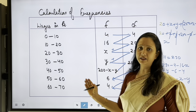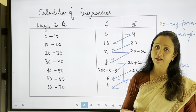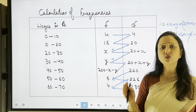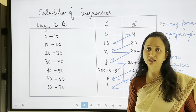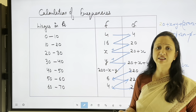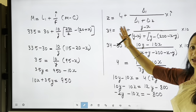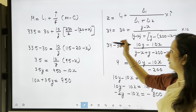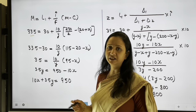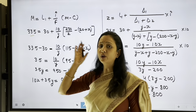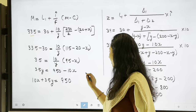Now, the question gives us median and mode. We will substitute the given values into their respective formulas to calculate the missing frequencies. The median formula is applied first. The median is given as 33.5, which falls in the group 32 to 40.